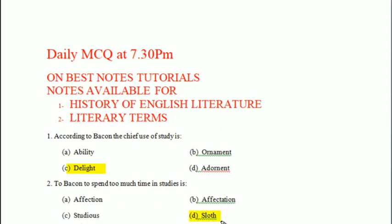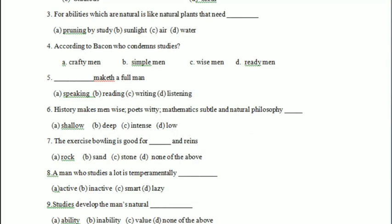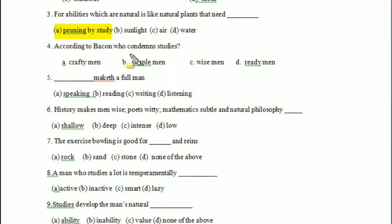Next question: Abilities which are natural are like natural plants that need — pruning by study, sunlight, air, or water? Your answer is 'pruning by study.' According to Bacon, who condemns studies? Crafty man, simple man, wise man, or ready man? Your answer is 'crafty man.'